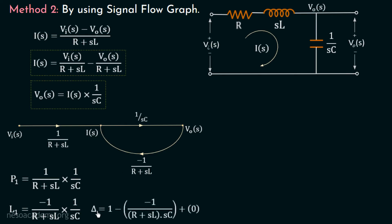Now we calculate the determinant of the SFG: delta equals 1 minus all individual loop gains. In this signal flow graph, there is only one loop having gain minus 1 over R plus SL multiplied with 1 over SC. So delta equals 1 minus of minus 1 over R plus SL multiplied with 1 over SC, plus 0 — as we do not have any non-touching loops, those gains are zero. Solving this, delta equals 1 plus 1 over R plus SL multiplied with SC. Lastly, the associated path factor delta1 equals 1, as there is no isolated loop in this signal flow graph.